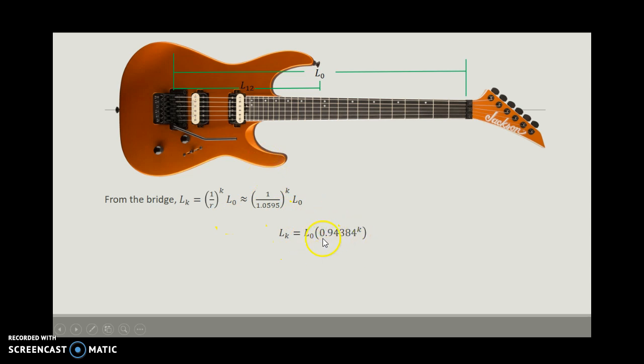So what we're in effect doing is that every time we go over one fret, we're decreasing the length of that string by 1 minus that, which is about 5.62% approximately.